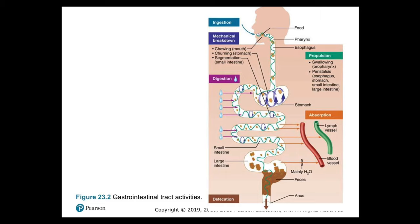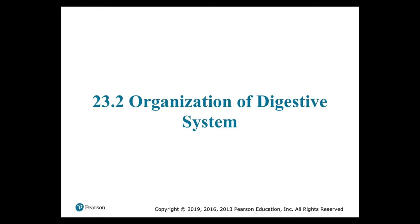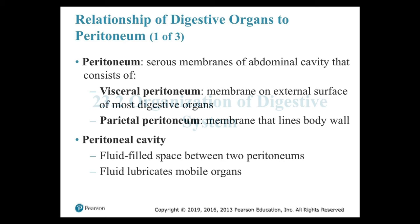Section 23.2: Organization of the Digestive System. The abdominal pelvic cavity contains the peritoneal cavity, which is lined by a serous membrane consisting of a superficial mesothelium covering a layer of areolar tissue. We can divide the serous membrane into the visceral peritoneum, which covers the organs within the peritoneal cavity, and the parietal peritoneum, which lines the inner surfaces of the body wall.